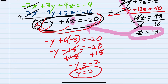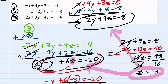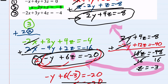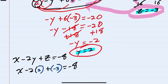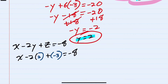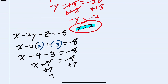We have z equals negative 3 and y equals 2. From here we can go back to any of the original equations to find x. Since this one has x by itself, I'll plug in there — x minus 2y plus z equals negative 8. Plugging in z equals negative 3 and y equals 2 gives us x minus 2 times 2 plus negative 3 equals negative 8. Simplifying: negative 2 times 2 is negative 4, and then minus 3, so x minus 7 equals negative 8. Adding 7 over, x equals negative 1.